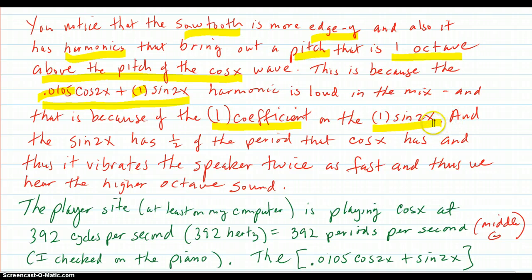And the sine 2x has one half the period that cosine x does, because the 2 is accelerating the angles. Or you might remember 2 pi over b is the new period. So that would be a period of pi, whereas this one has a period of 2 pi. And thus it vibrates the speaker twice as fast. And thus we hear a higher octave sound.